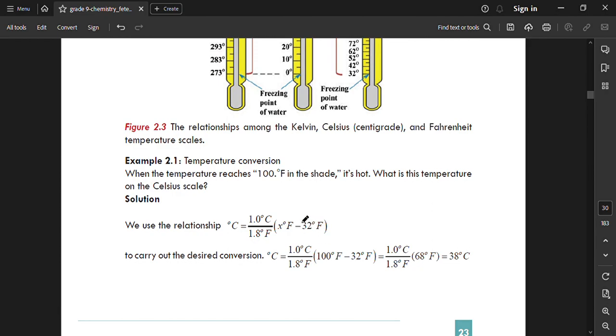For example, when the temperature reaches 100 degrees Fahrenheit in the shade it is hot. What is the temperature on the Celsius scale? We use the relationship: degree Celsius equals 1.0 degree Celsius over 1.8 degree Fahrenheit times the quantity of degree Fahrenheit minus 32 degrees Fahrenheit. So 100 minus 32 equals 68 Fahrenheit. Our answer is 38 degrees Celsius.